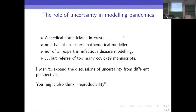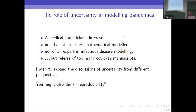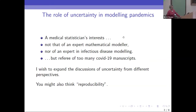This is me talking about things from a perspective of having been a medical statistician involved not typically in infectious diseases. I'm not coming at this as an expert in mathematical modelling or indeed an expert in infectious disease modelling, but as a referee of rather more COVID-19 manuscripts than I would have liked. I thought it might be useful to think more about how one might discuss uncertainty from my background and mix that with other perspectives.